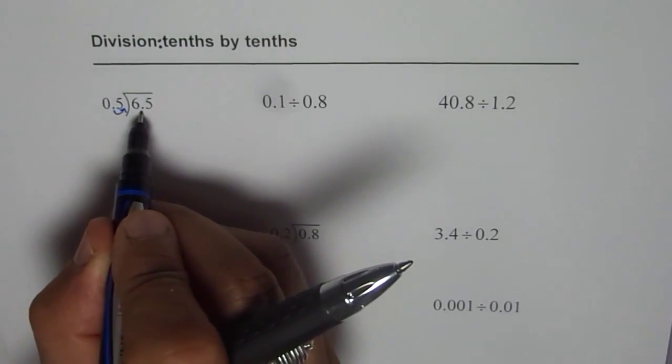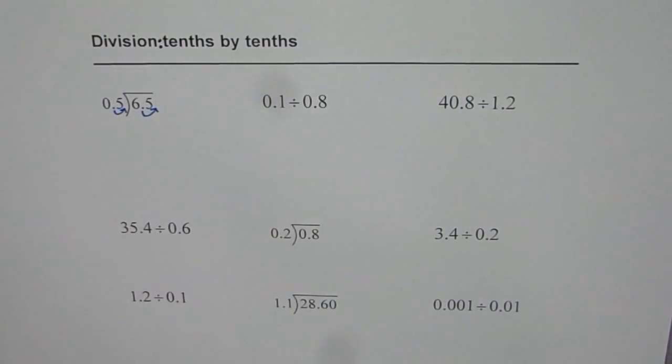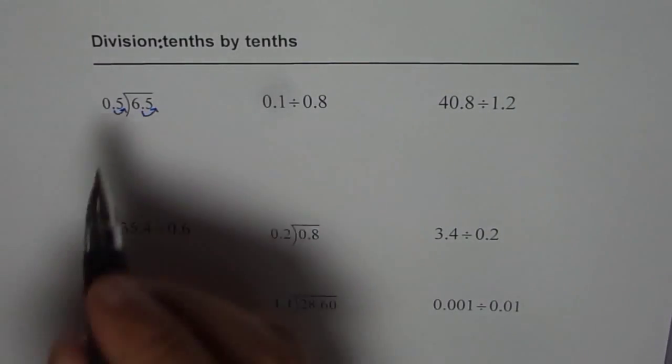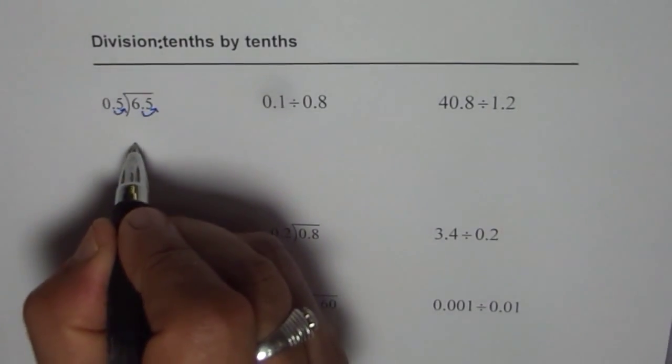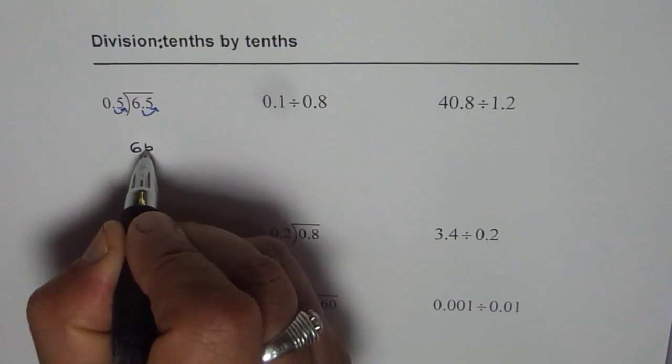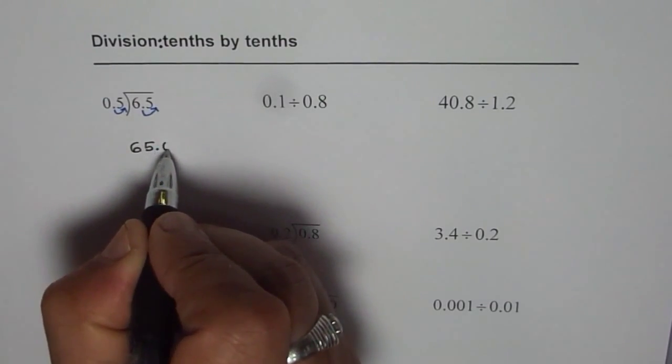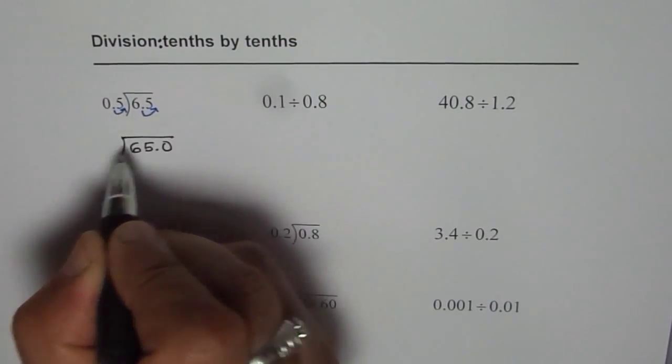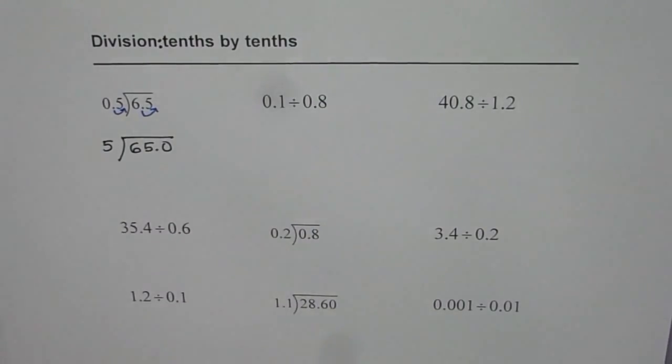I have to move for dividend also decimal point one place to the right. So I can now rewrite this question as 65.0 divided by 5. Do you see that? And now we can divide. So let us divide.